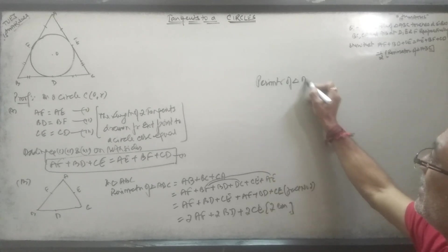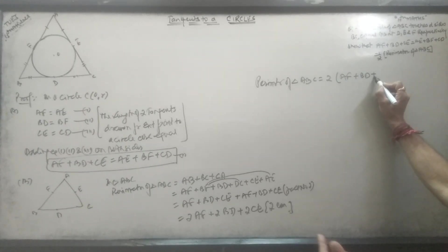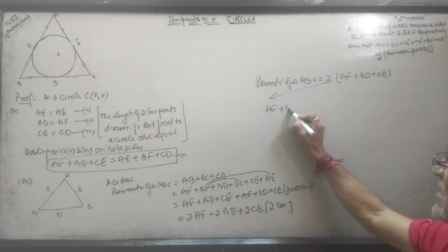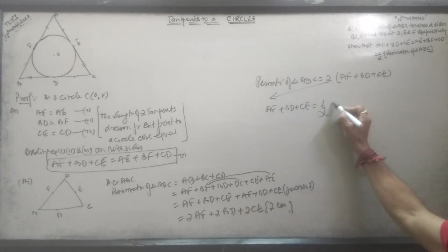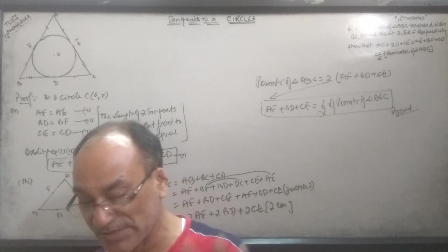So the perimeter of triangle ABC equals 2 times AF plus BD plus CE. By cross multiplication, AF plus BD plus CE is half of the perimeter of triangle ABC. Is it clear? Yes. We can do this.